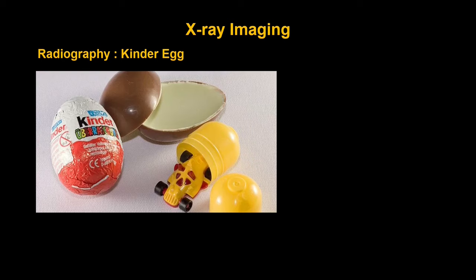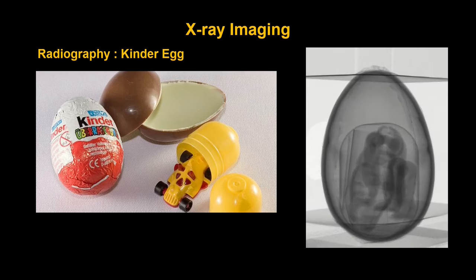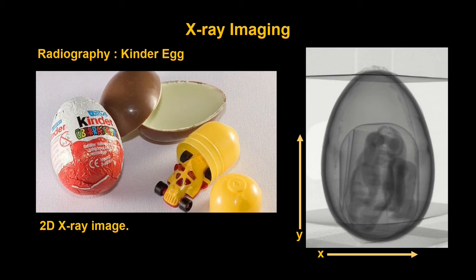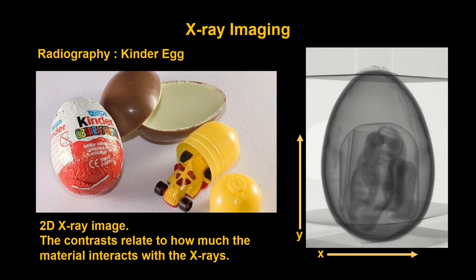So now that we have an idea of how the detector works, let's look at the example of radiography. Here I have a kinder egg on the left-hand side. If you don't know what a kinder egg is, it's a chocolate egg with a toy inside. And here on the right, we have a radiograph of the egg. The radiograph is a 2D X-ray image. We can label it with an X and a Y. And the contrast difference that we see here is from some of the pixels having more intensity of X-rays and some of them having less intensity of X-rays. And really this relationship comes from the X-rays interacting more with the material that it's going through or interacting less.